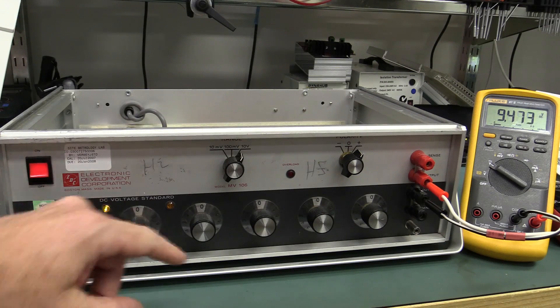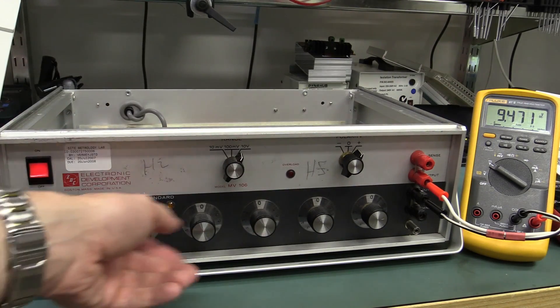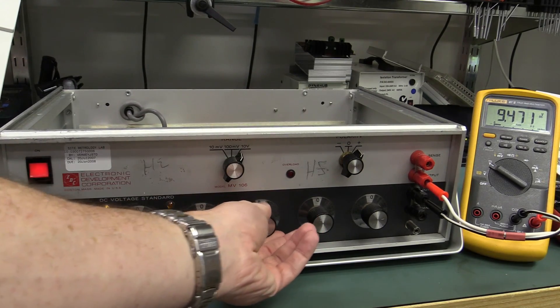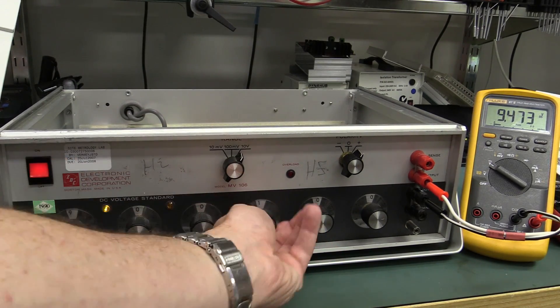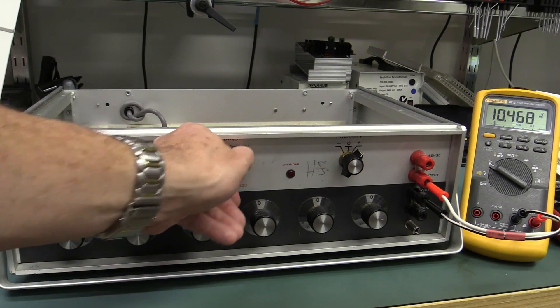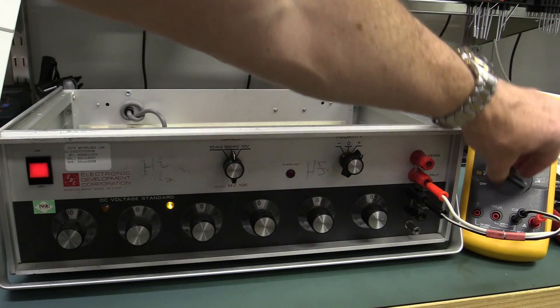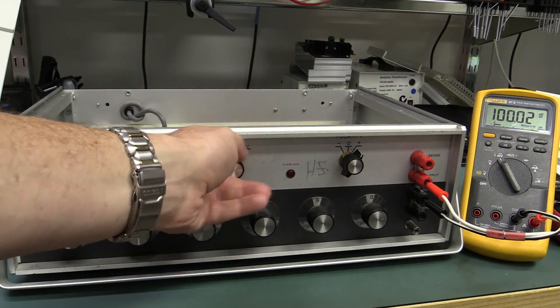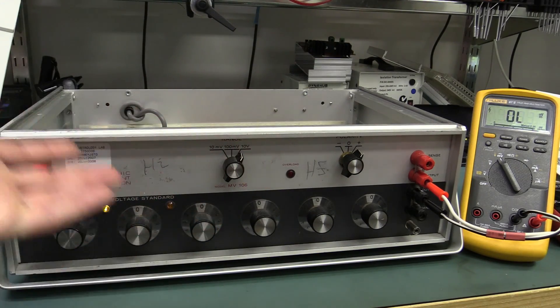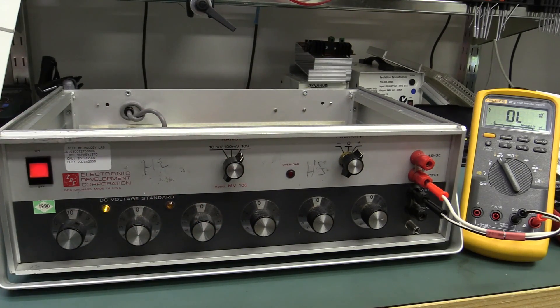And if I switch it down to 9 here, it's still 9.47. So it had all that resolution. So it seems to work, but it was out. And if I turn it down to 100 millivolts here, it's bang on, of course. And if I turn it down to 10 millivolts, it was bang on again. It was only the 10 volt range like this. So I thought, oh, no!